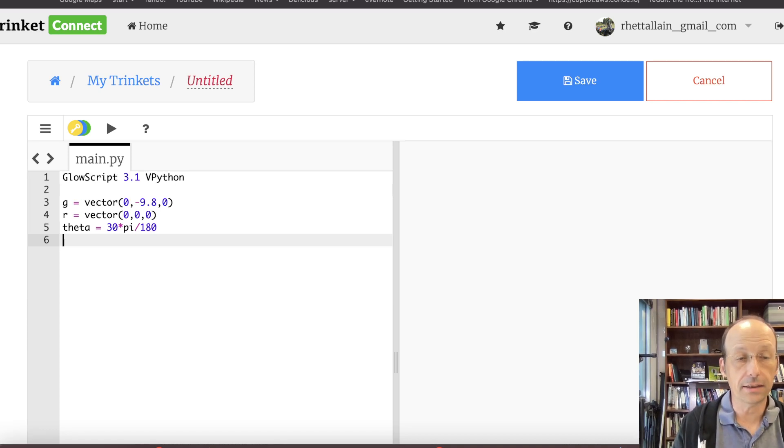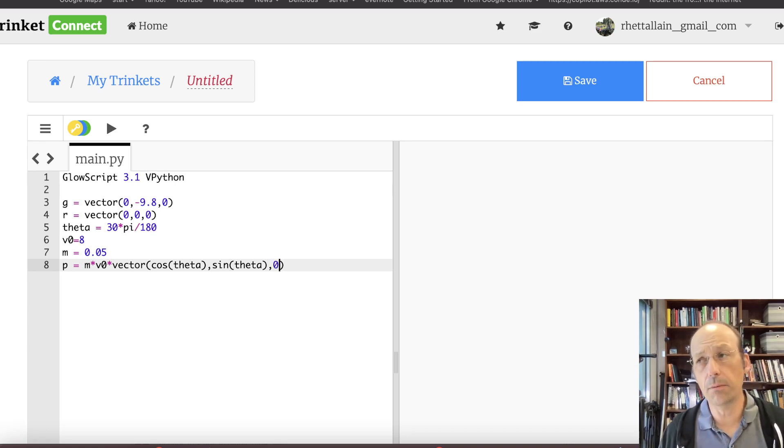Now I need the initial velocity. Let's say V0 equals 8. P is the momentum. I need the mass. M equals 0.50 grams. P equals M times V0 times a vector, cosine theta, sine theta, 0. This is the same thing I did before. The only thing different is I'm not displaying it.